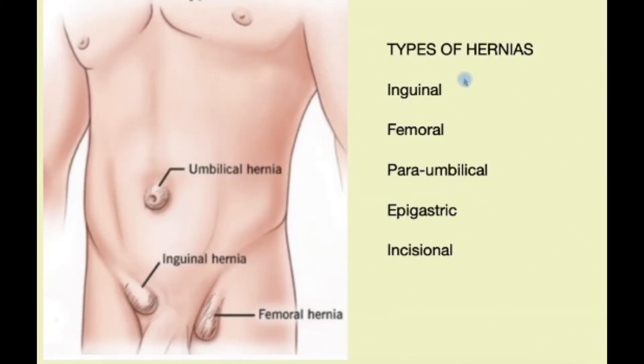Now let's look at the different types of abdominal wall hernias. These are the commonest types that we encounter.